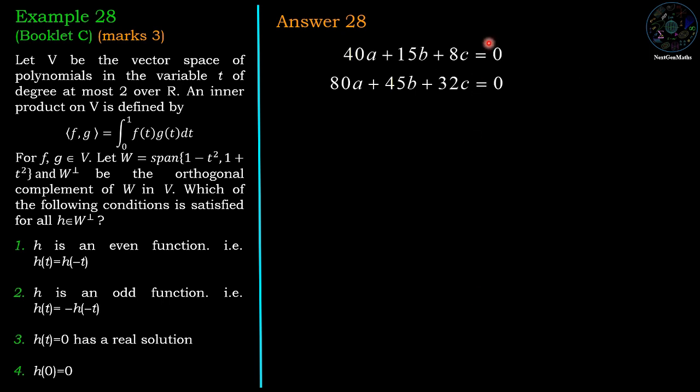Now we have two equations and three unknowns. By simple elimination, we are able to find the value of a and b: a equals 1 by 5 times c, and b equals minus 16 by 15 times c.